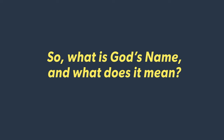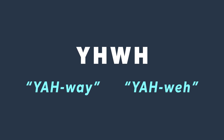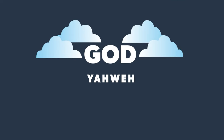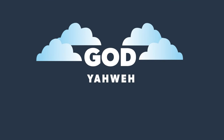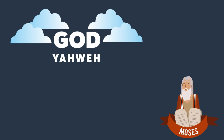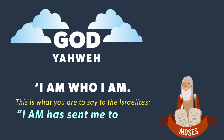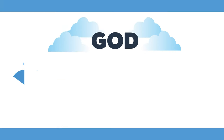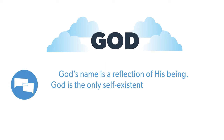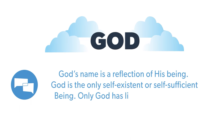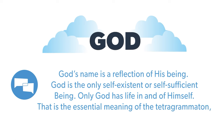So what is God's name, and what does it mean? The most likely choice for how the Tetragrammaton was pronounced is YHWH, or something similar. The name YHWH refers to God's self-existence. YHWH is linked to how God describes Himself in Exodus 3:14 — God said to Moses, 'I am who I am. This is what you are to say to the Israelites: I am has sent me to you.' God's name is a reflection of His being. God is the only self-existent or self-sufficient being. Only God has life in and of Himself. That is the essential meaning of the Tetragrammaton YHWH.